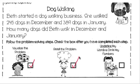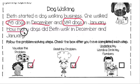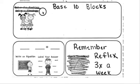I retold the problem to you. So our last step is to underline key words and circle key numbers. So our numbers would be 245 dogs in December, 389 dogs in January, and then how many dogs did Beth walk in December and January? So then we can check that box off.